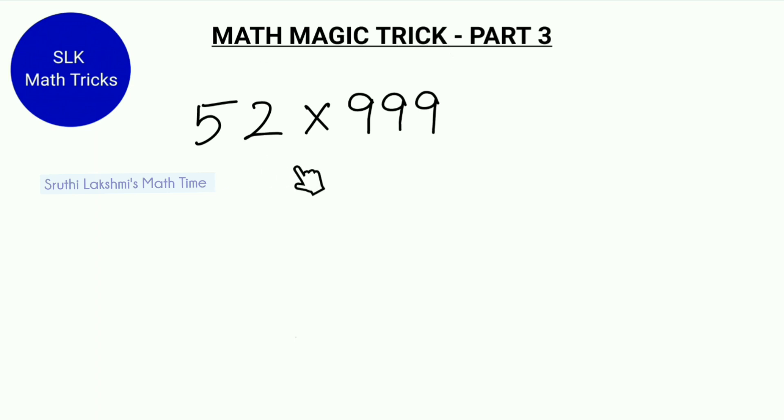So let's see an example: 52 into 999. What is 1 less than 52? So 52 minus 1 is 51.